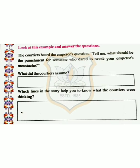In this box, you have to write what the courtiers assumed. The courtiers assumed that some mischief-maker or an evil man must have played that mischief with the king of kings, and he should be punished — he should not be pardoned at any cost. Anybody who dared to do so must be killed; that would be the only deserving punishment.